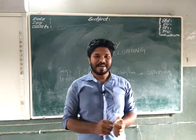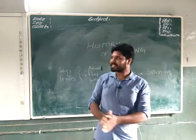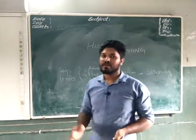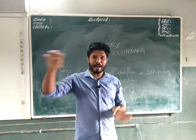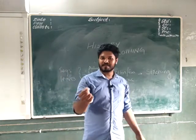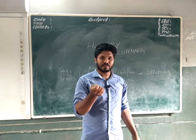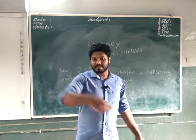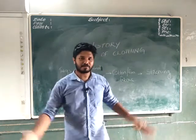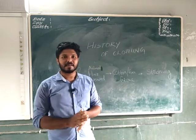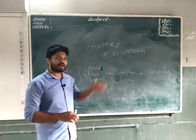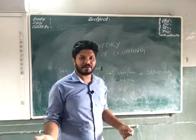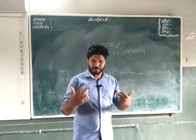Hello dear students, welcome back to the last portion of our chapter, that is the history of clothing material. We already discussed how from a fiber a fabric is developed — fiber means from a very small thing, there are small string-like structures from which a cloth material is prepared. We already discussed this process. Now we are going to discuss the history — what is the past, what were the clothes that people who lived on this earth wore at earlier times.